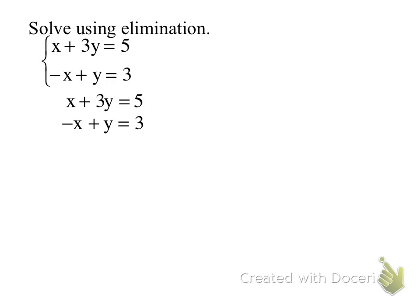So when I add them going up and down, it's 0 plus what is 3y and 1y? 4y. And then I'm also adding my constants, 5 plus 3, that's 8. So I have 4y equals 8. Now what would I do, Piper? Divide by 4 both sides and then you get y equals 2.